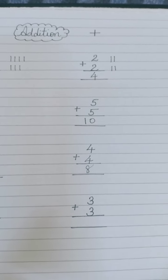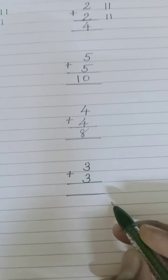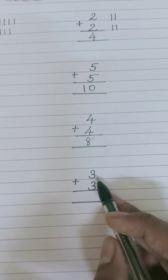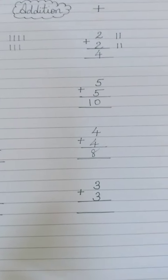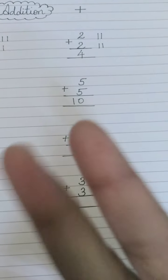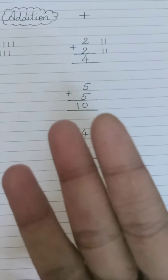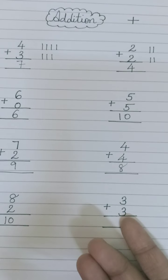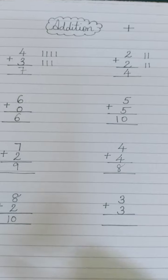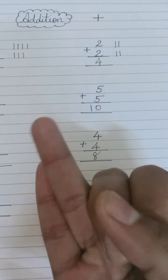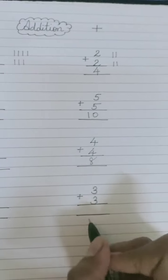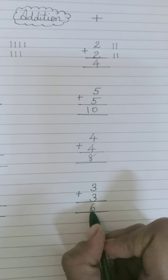Now the next one is three plus three. Keep any three in your mind and then take out three fingers: one, two, three. I will keep three in my mind and add the remaining three: four, five, six. So we got the answer six.